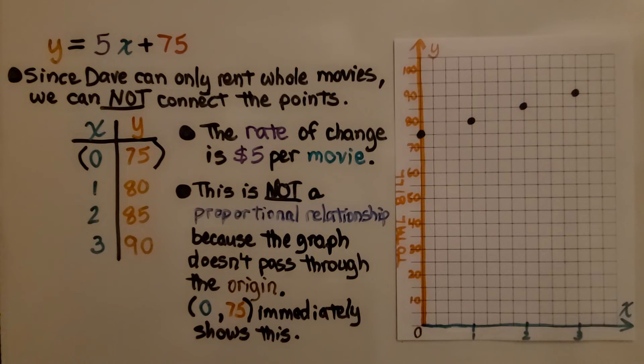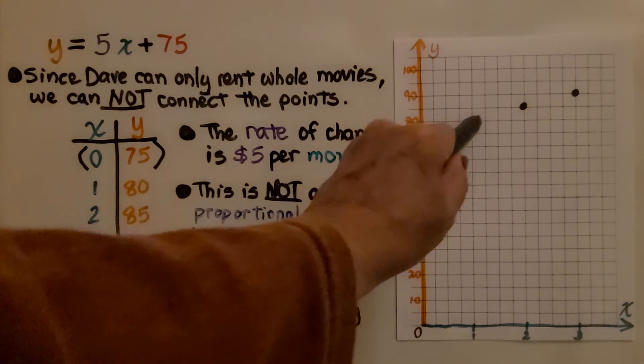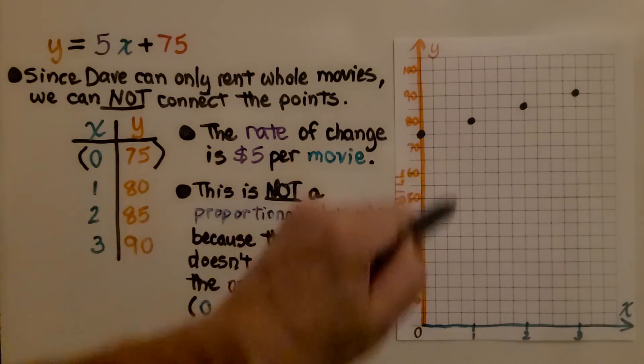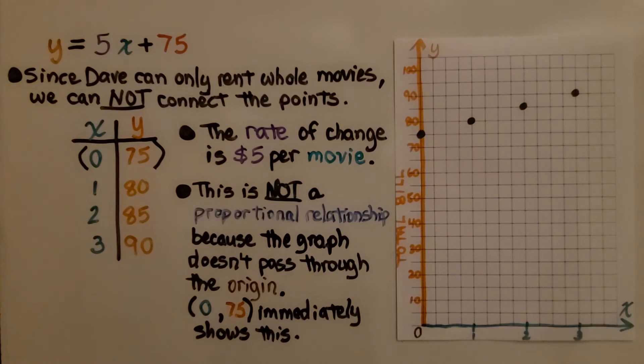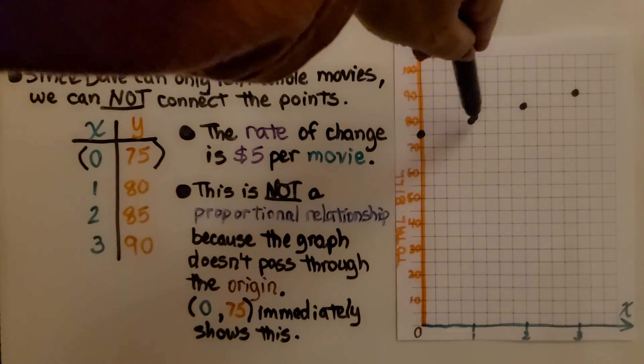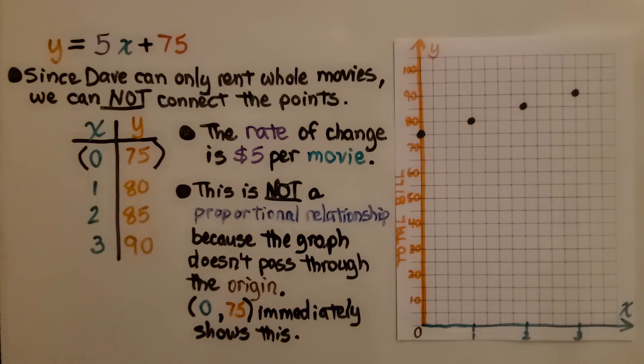The rate of change is $5 per movie. This is not a proportional relationship because the graph doesn't pass through the origin. We can't connect this with a line because he can't rent half of a movie. It's only whole numbers. So a line would represent all the fractional amounts of a movie in between the two points. We have to leave it as unconnected points.